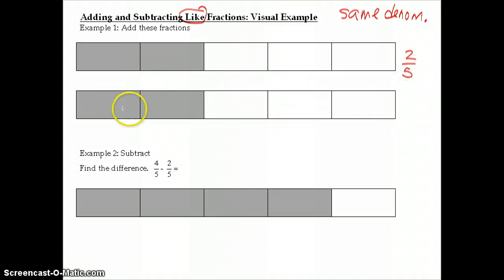And this fraction here, again, we have two parts shaded out of a total possible in this unit of five, so this is also two-fifths. So we're going to add two-fifths plus two-fifths.